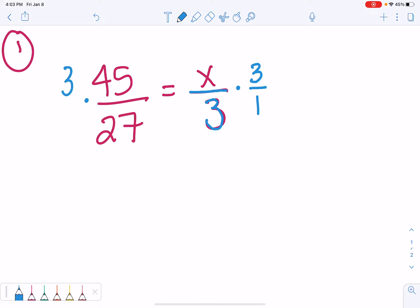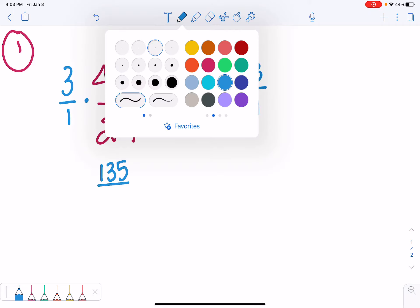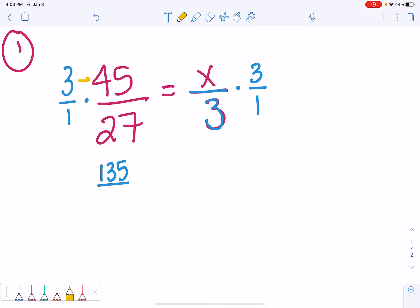We need to multiply both sides in order to keep the equation balanced. So, on the left side, we have 3 times 45, which is 135, and 1 times 27. So, we do these two numbers times each other and these two.